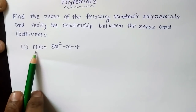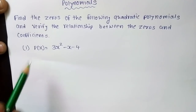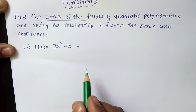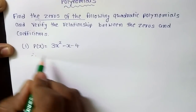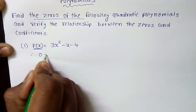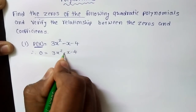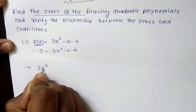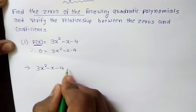Here the given polynomial is P(x) = 3x² - x - 4. The first question asks us to find the zeros of the polynomial. Zeros means the solution of the given quadratic polynomial. We will consider P(x) = 0, so 3x² - x - 4 = 0.